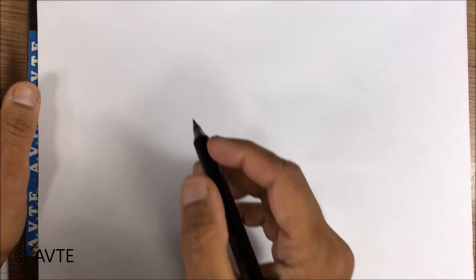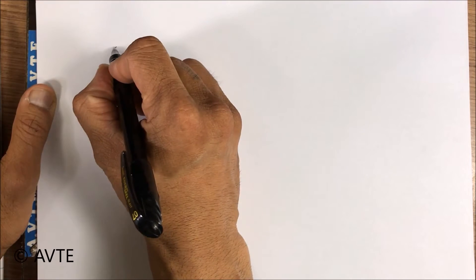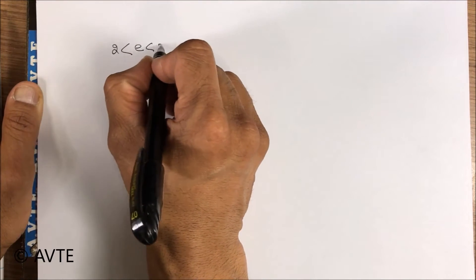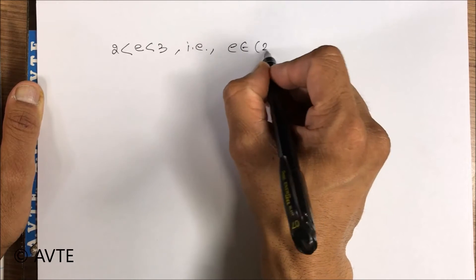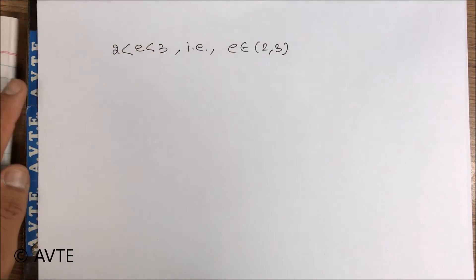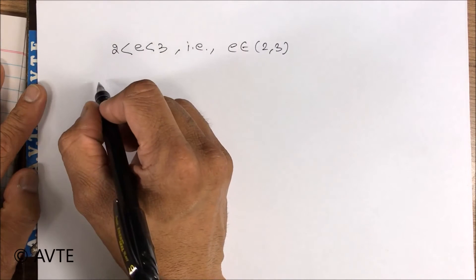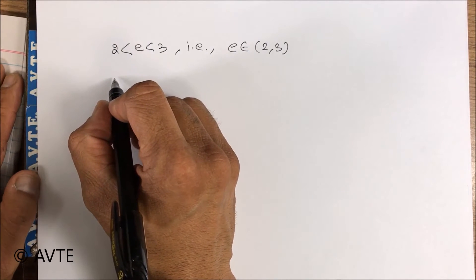Usually you are told that the value of e is between 2 and 3, that is e lies between 2 and 3. But why does it happen so? For that we need to understand the expansion of e to the power x.